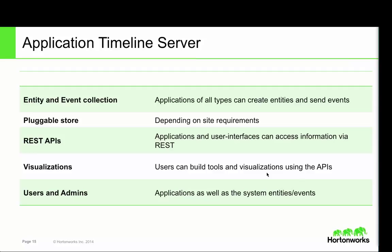The server stores all events in a portable store. Depending on your site size, you may be running on a local embedded database, or it could be an HBase kind of scalable, highly scalable store. Once events reach the store, they're exposed to end users via REST API. Users can build visualizations using the APIs, build tools, and do performance analysis of their applications. Admins can use this information to figure out what's happening in their cluster, how queues are being utilized, and whether capacity planning is done correctly.